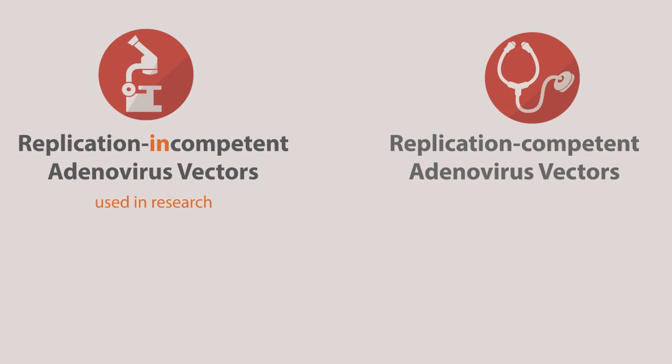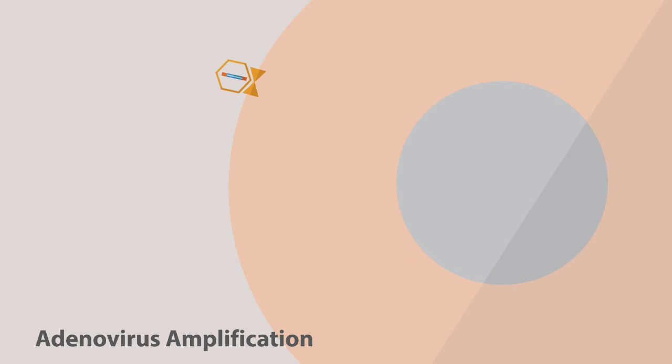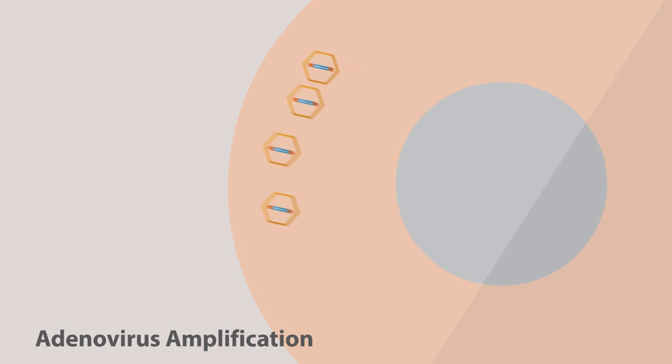While most replication-incompetent adenovirus vectors are used in research, it is not uncommon to have replication-competent adenovirus for clinical trials. Conditionally replication-competent adenoviruses are often exploited for cytotoxicity and used exclusively on targeting tumor cells. Cancer cells are more permissive to adenovirus replication because the gene expression pattern of cancer cells greatly facilitates adenovirus replication. A general procedure of adenovirus amplification begins with transfection of producer cells with recombinant replication-defective adenovirus vector carrying the transgene. The vector viruses are replicated and packaged in the producer cells, and after several rounds of infection, transgene vector particles are purified and then used to infect the targeted cells.